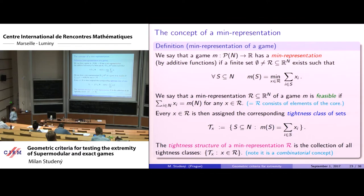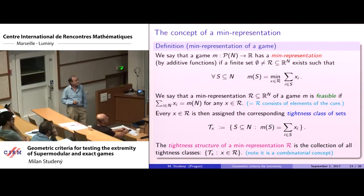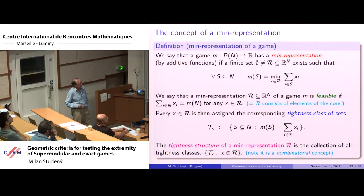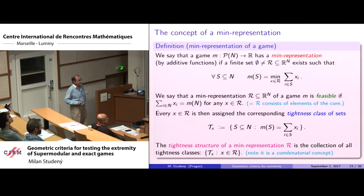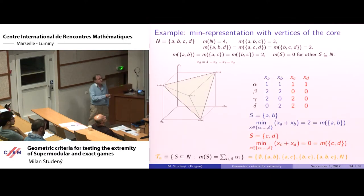A feasible min representation consists of elements of the core — every vector in the min representation has the same sum. A useful combinatorial concept is the tightness class: given a vector in a min representation, its tightness class is the collection of sets at which that vector achieves the minimum. The tightness structure of a min representation is the collection of all tightness classes, which is a purely combinatorial concept.